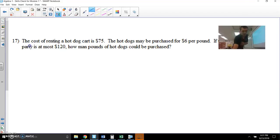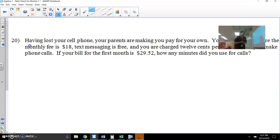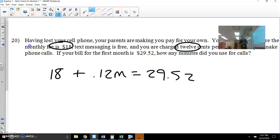So I think I want to skip to problems that were assigned, starting with number 20. Having lost your cell phone, your parents are making you pay for your own. You find a phone where the monthly fee is $18. That's one time payment of $18. The text messaging is free, and you're charged 12 cents, so that is plus 0.12 per M. And it says if your bill for the first month equals 29.52, how many minutes did you use for calls?